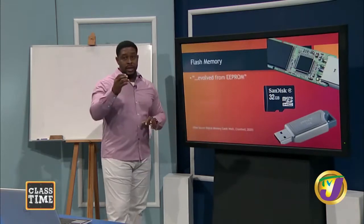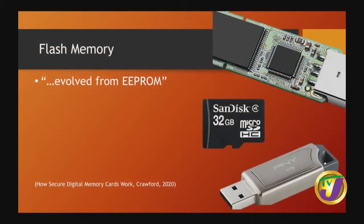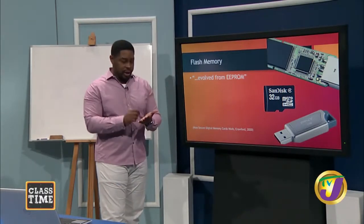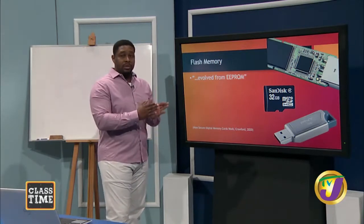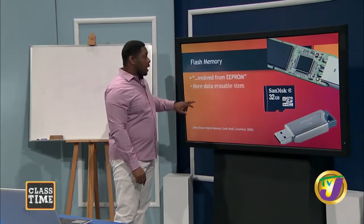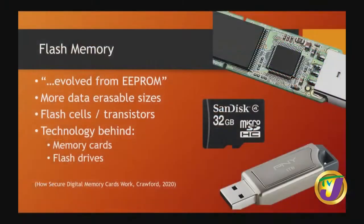Flash memory's technology comes from EPROM. With EPROM you can change small amounts of data, but with flash memory you can change considerably more data — that's the key difference. This technology was then used for phones and is resident on the board. Flash drives and memory cards use the same underlying technology. If you ever opened a flash drive, you'd see a little chip inside — that is flash memory.